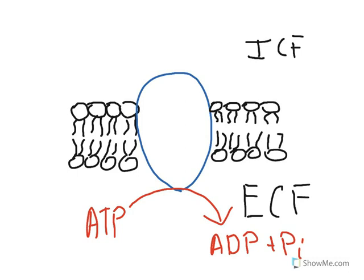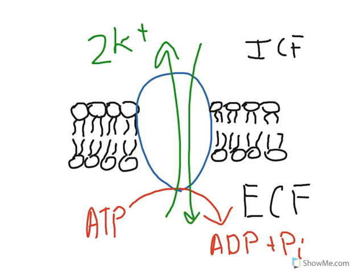And that will drive this pump to do one thing: it will bring in two K-pluses into a cell and pump out three Na-pluses. And this will generate a transmembrane potential that's pretty distinctive.